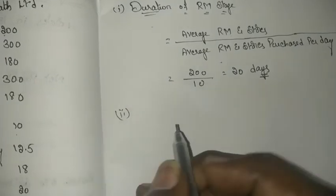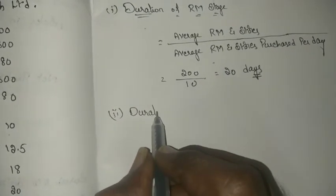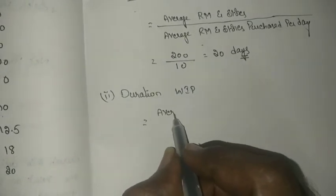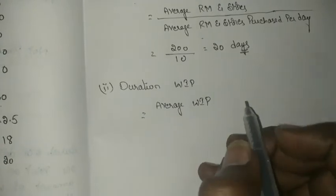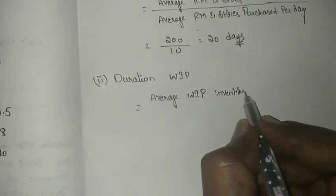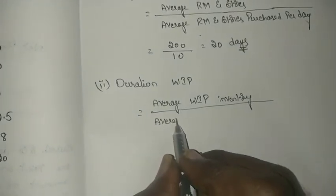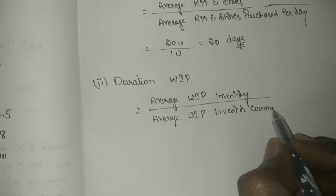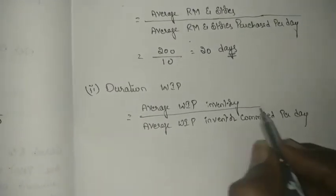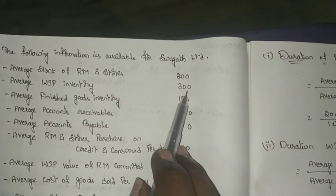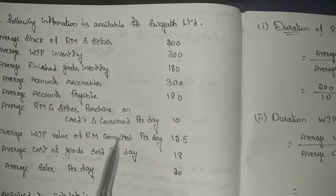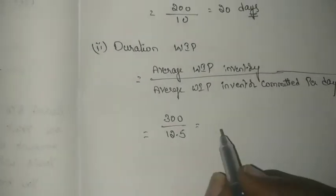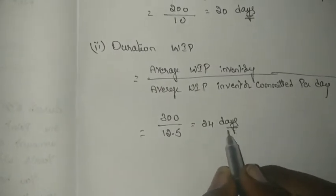Next, they are asking to calculate the duration of work in progress. The formula is: average work in progress inventory divided by average work in progress value of raw material committed per day. In the problem, average work in progress inventory is 300, and average work in progress value committed per day is 12.5. So 300 divided by 12.5 gives 24 days as the duration of work in progress.